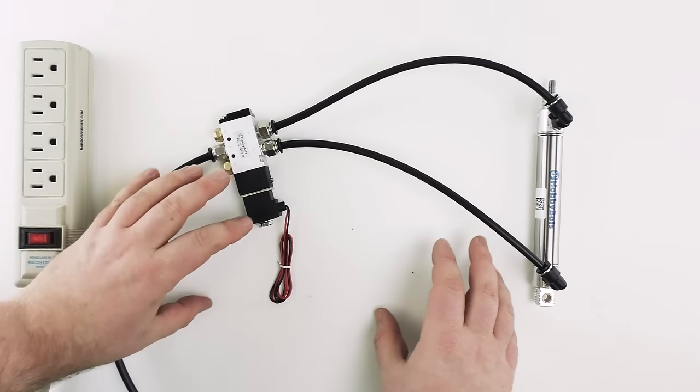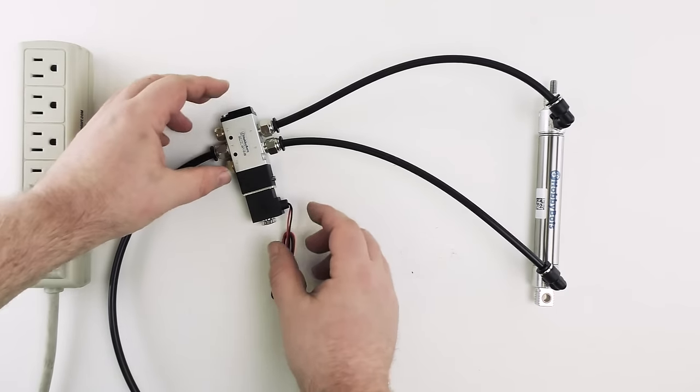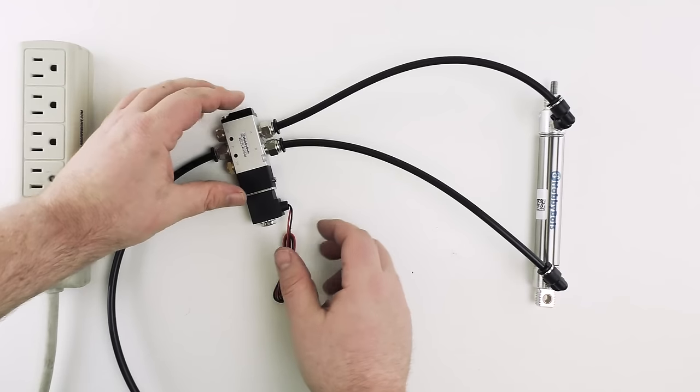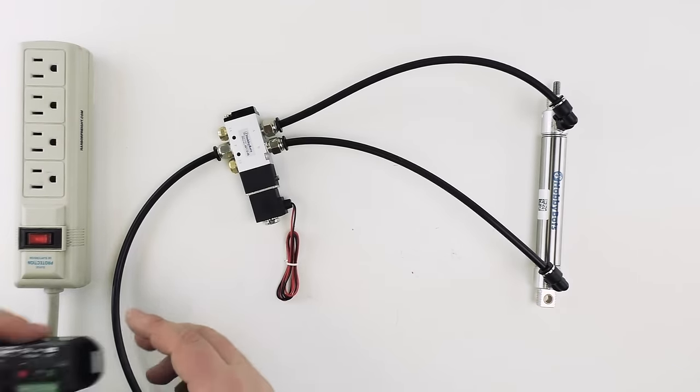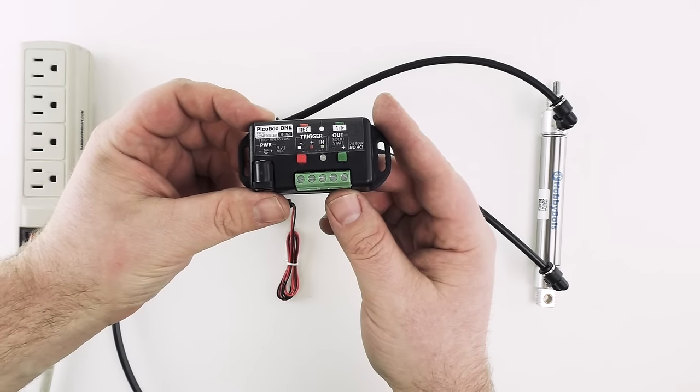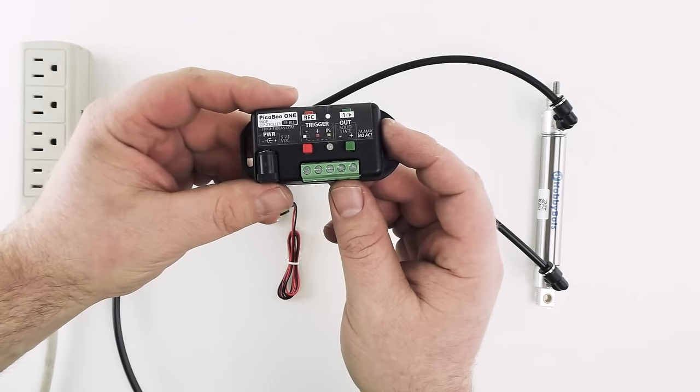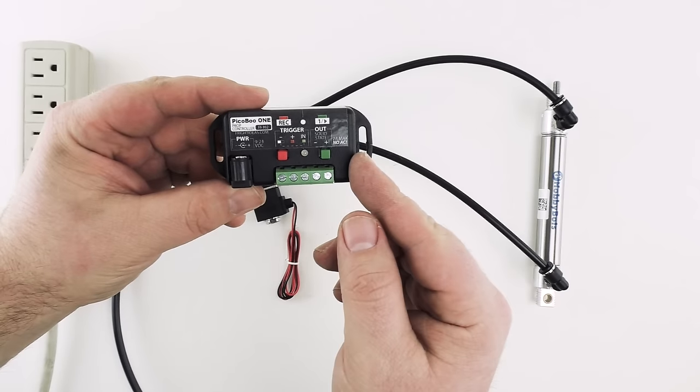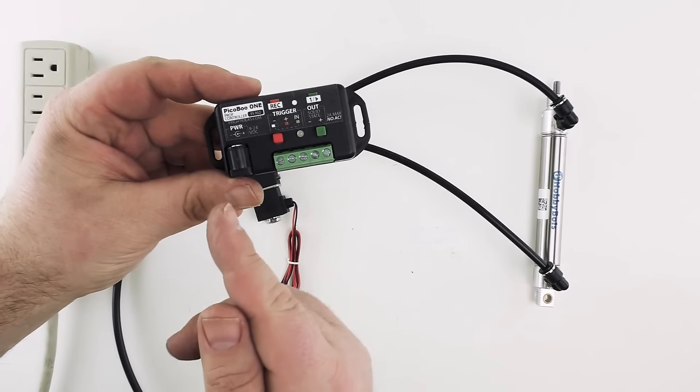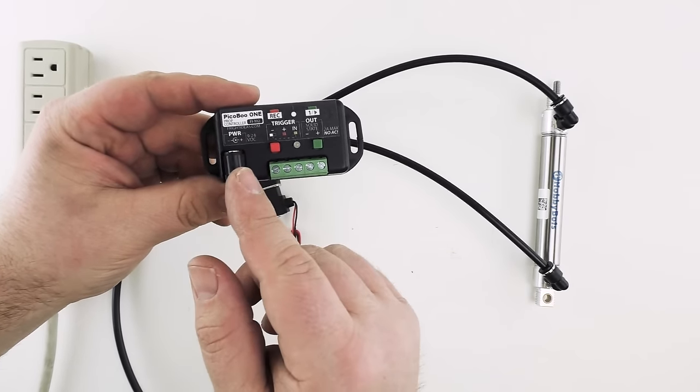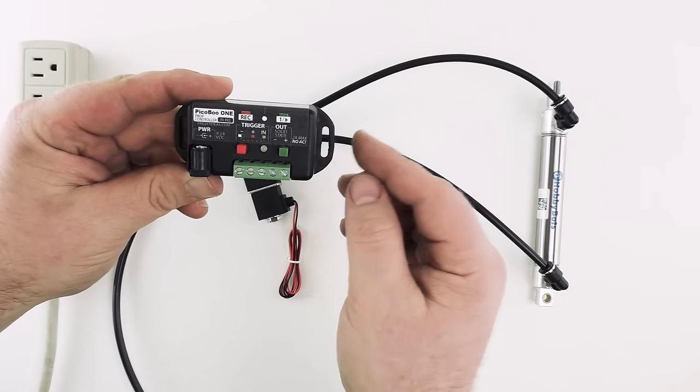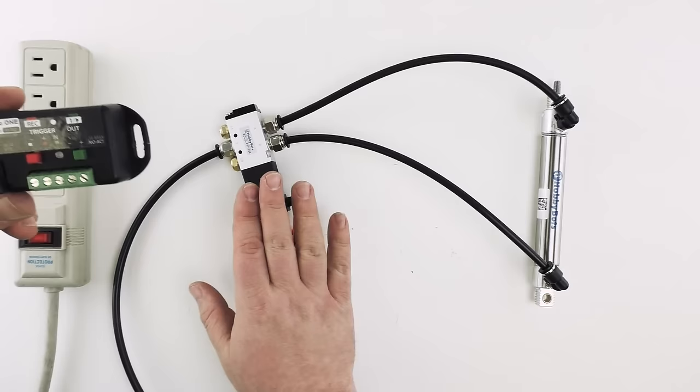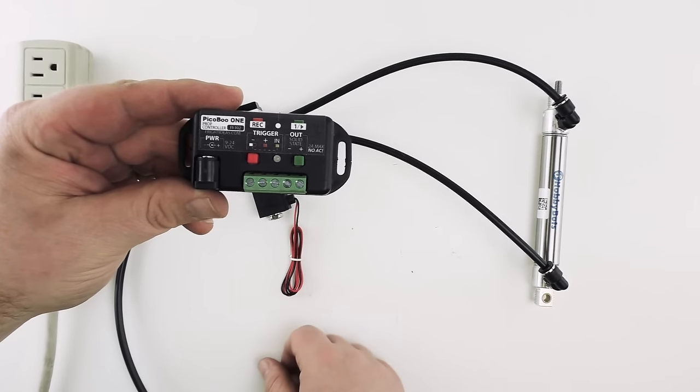The next step is to control this setup. As I said before the solenoid is essentially an electric switch so we need something that can tell this when to turn off and on. For that we're going to be using a Peekaboo One controller. This is a simple controller. It has a single output that's solid state. Meaning that whatever voltage we send in between 9 and 24 volt DC it will send out of this output in the sequence that we program with the controller. We're using a 12 volt solenoid so we're going to use a 12 volt power supply with this.